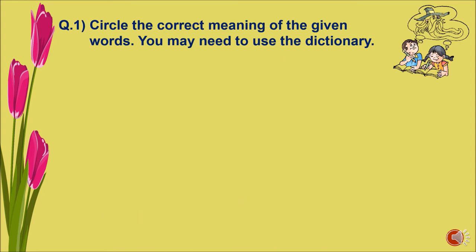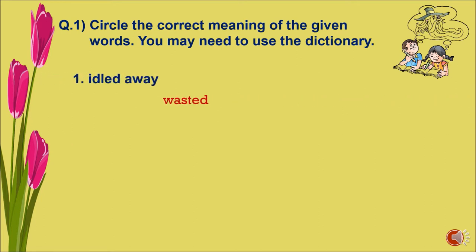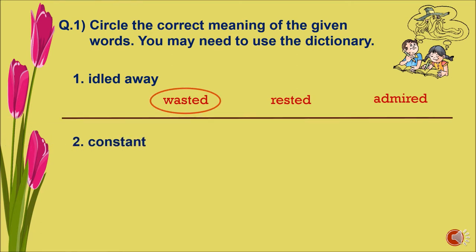You may need to use the dictionary. Number one: idle away — the options are wasted, rested, and admired. The correct meaning of idle away is wasted. Number two: constant — the options are copy, construct, and steady. The correct option is steady.